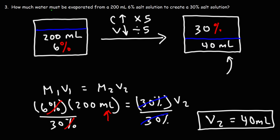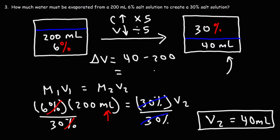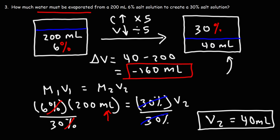But this is not the final answer. Because the question asks how much water must be evaporated — in other words, we want to calculate the change in volume. We started with 200 milliliters and ended with 40 milliliters. The change is 40 − 200 = −160. So we need 160 milliliters of water to be evaporated from the original solution to create a more concentrated solution with a concentration of 30%. We have to lose 160 milliliters of water to go from 200 to 40, increasing the concentration from 6% to 30%.